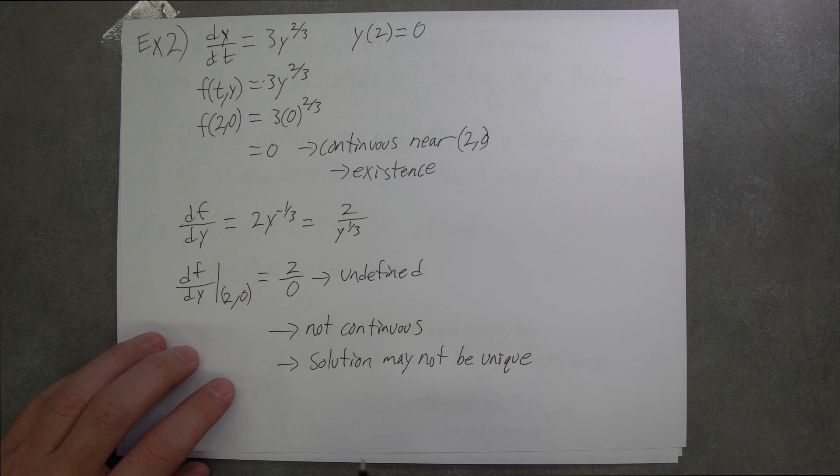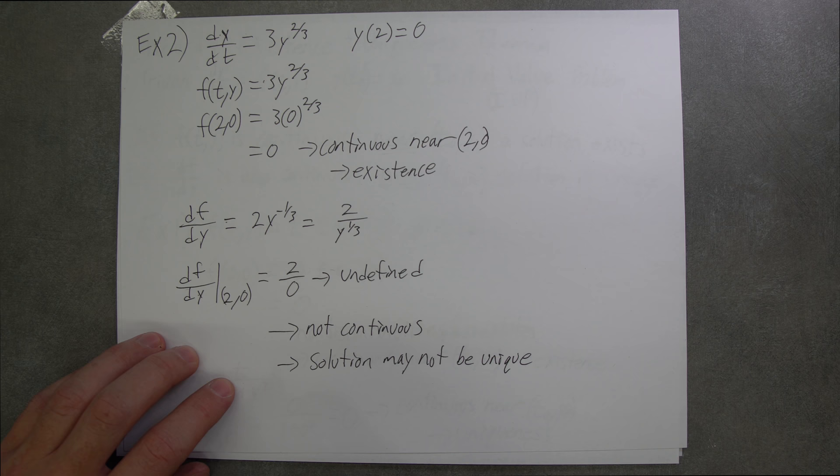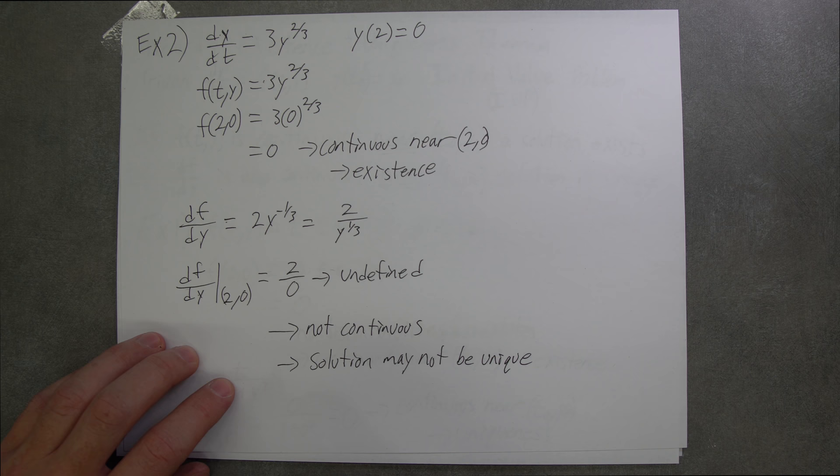This is an important distinction, because Picard's theorem does not say that the solution is not unique. It only says that it may not be unique, because the test fails. I hope this was helpful with Picard's theorem, and we'll see you at the Math Center.